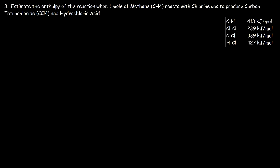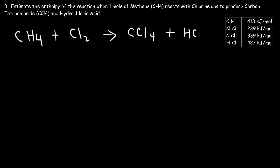Let's work on one more example: estimate the enthalpy of the reaction when one mole of methane reacts with chlorine gas to produce carbon tetrachloride and hydrochloric acid. Methane reacts with Cl₂ to produce CCl₄ and HCl. We're dealing with one mole of methane. We need four in front of HCl to balance the four hydrogen atoms, and then four chlorine atoms on the right gives us four in front of Cl₂. Now the reaction is balanced.